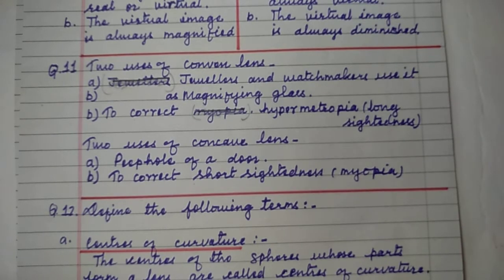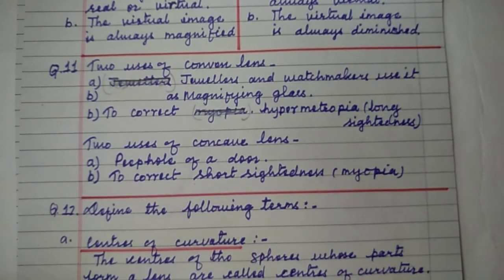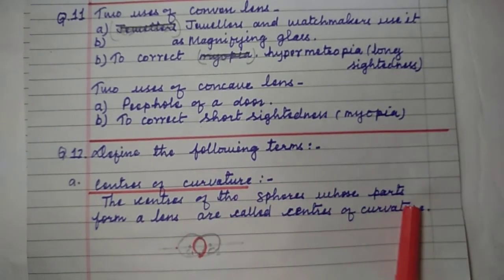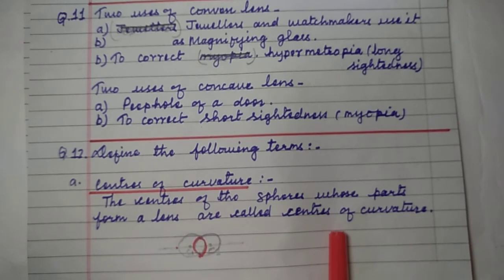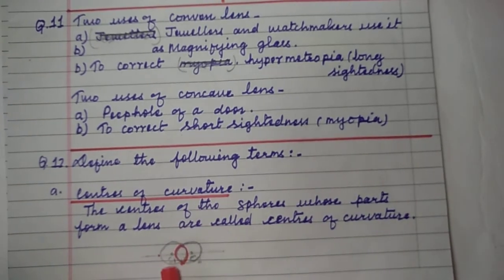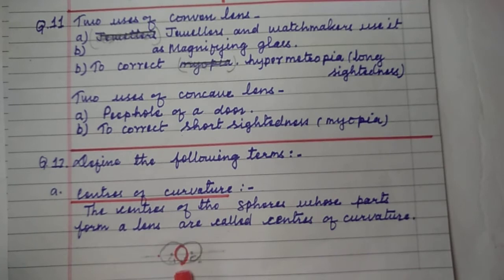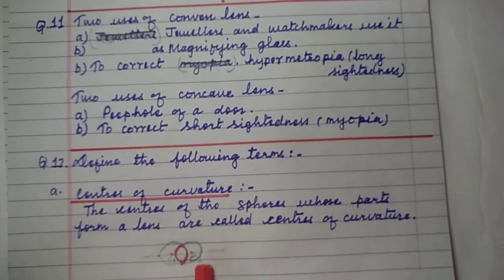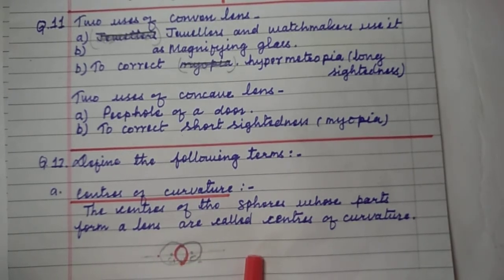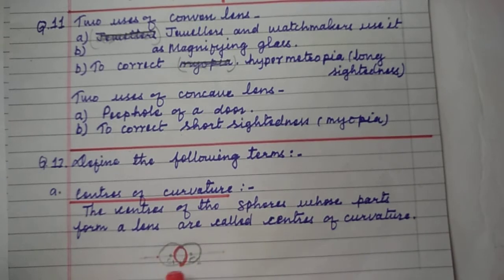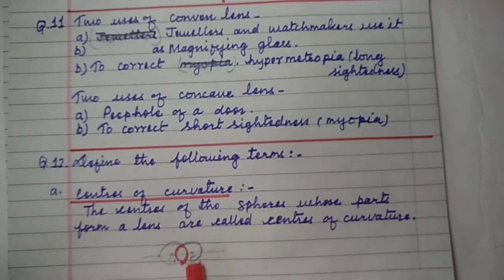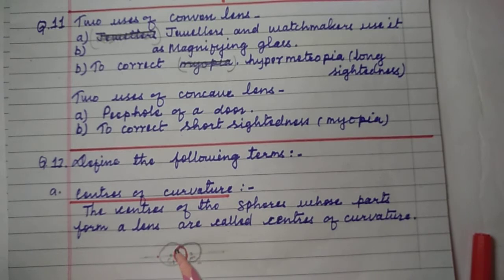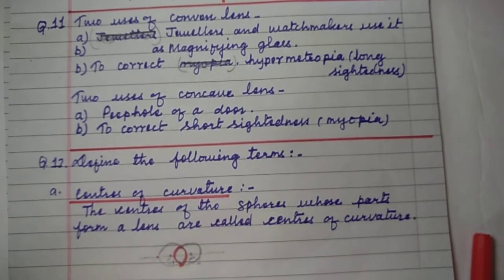Define the following terms. Centers of curvature: the centers of the spheres whose parts form a lens are called centers of curvature. The lens is made up of small parts of two spheres. These two spheres have their centers C1 and C2 — these are called centers of curvature, and the small parts of these spheres form the lens.